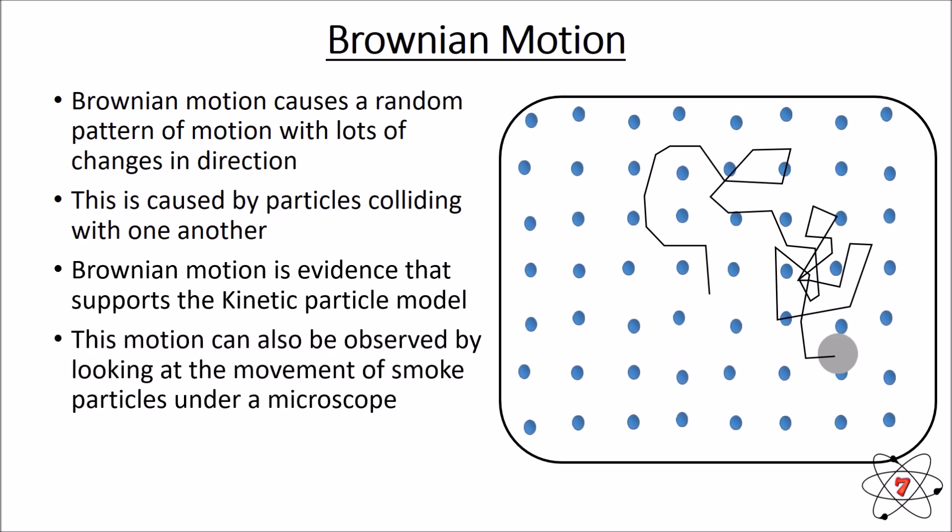And this motion can also be observed by looking at a microscope and looking at the movement of smoke particles under the microscope. And we can see that they follow this exact pattern that we would expect with Brownian motion. They vibrate and they move randomly. Despite being in a gas, despite being free to move, they're being hit and bumped and collided with by smaller particles making them move.